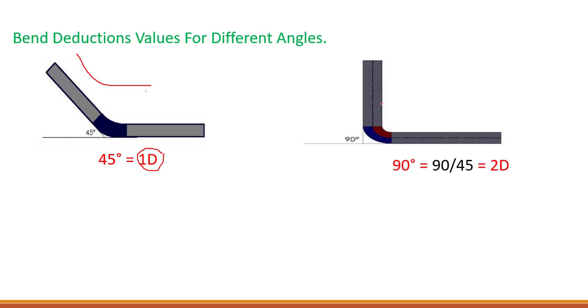Next, if we have a bend of 90 degrees, if we bend the steel bar at 90 degrees, we need to do the deduction as 2D. So this is basically the base. If you have any kind of angle, you need to divide it by 45 in order to find out the bend deduction.